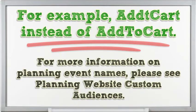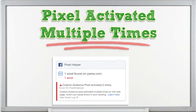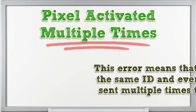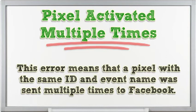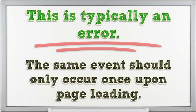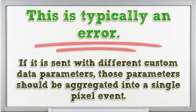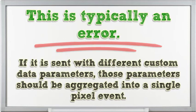For more information on planning event names, please see Planning Website Custom Audiences. Pixel activated multiple times: this error means that a Pixel with the same ID and event name was sent multiple times to Facebook. This is typically an error — the same event should only occur once upon page loading. If it is sent with different custom data parameters, those parameters should be aggregated into a single Pixel event.